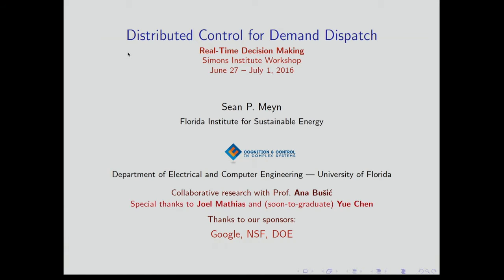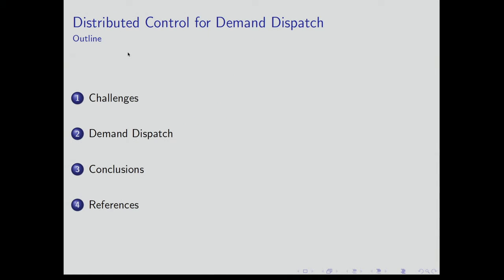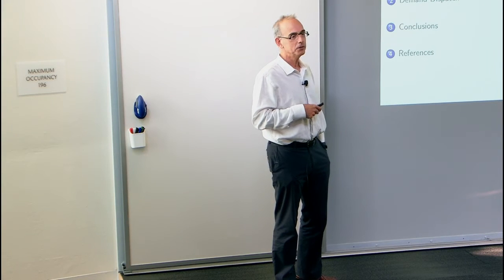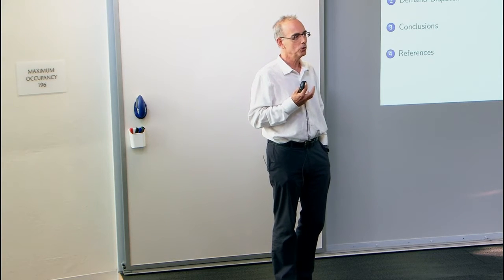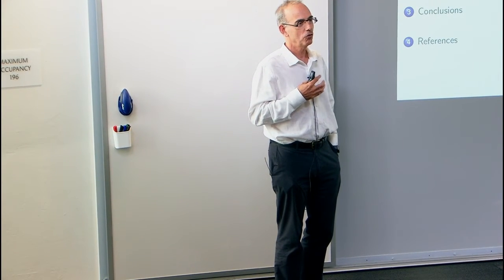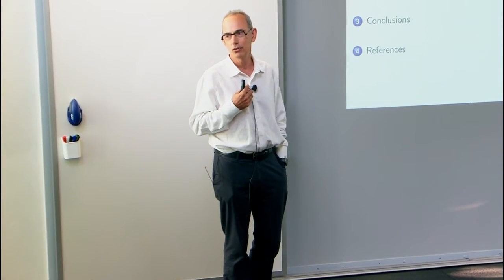I'm going to talk about the challenges with renewable integration and distributed generation. A lot of the challenges are because we really need better thinking about control strategies. We have to get back to basics. Now, 'demand dispatch' is a term that came out of a Google vision paper trying to redefine how you might engage loads.